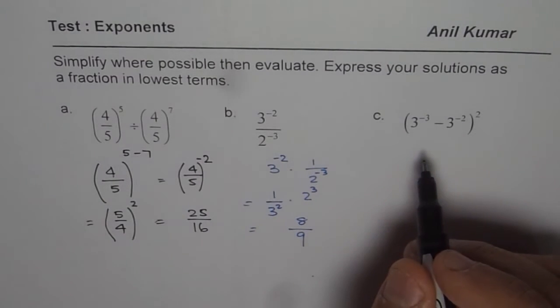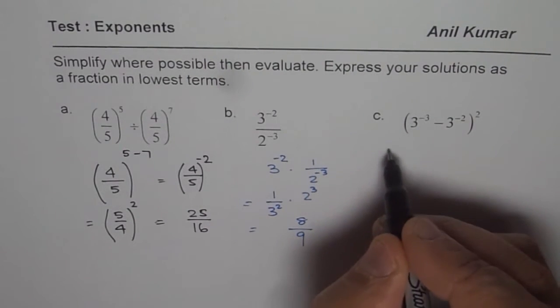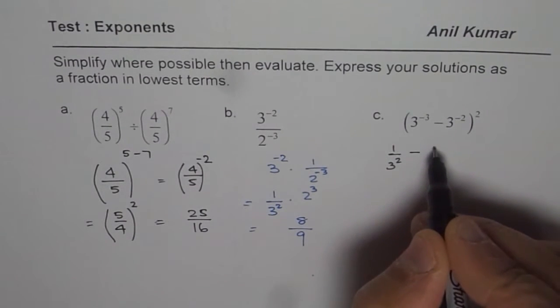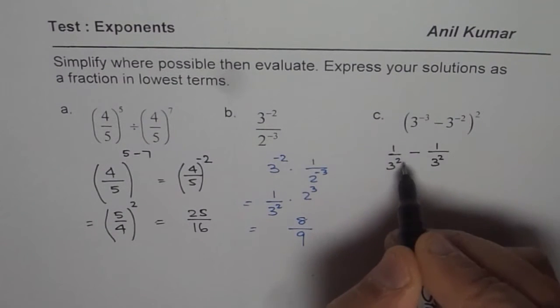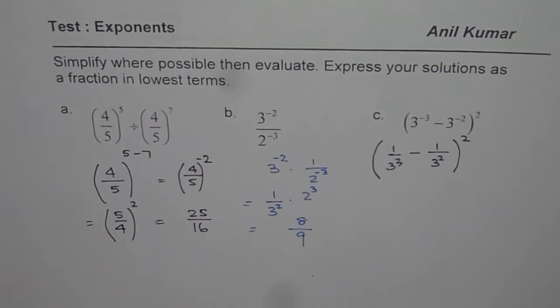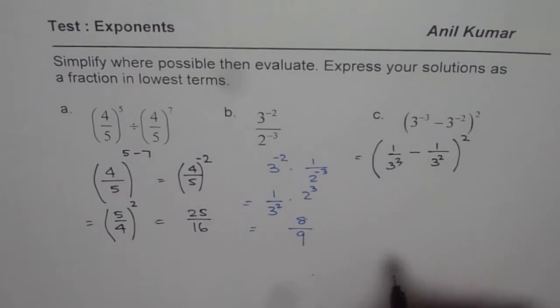Now let's look into part c. 3 to the power of minus 3 means 1 over 3 cubed, minus 3 to the power of minus 2 means 1 over 3 squared. Sorry, that's cube. We have all this to the power of 2.